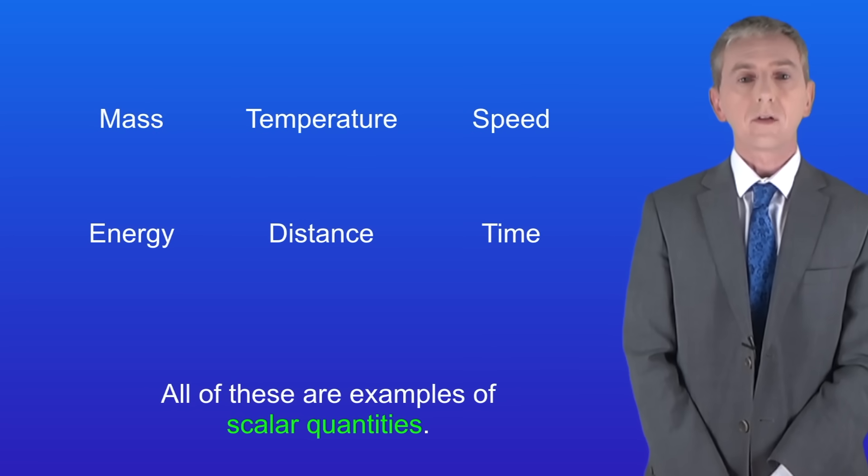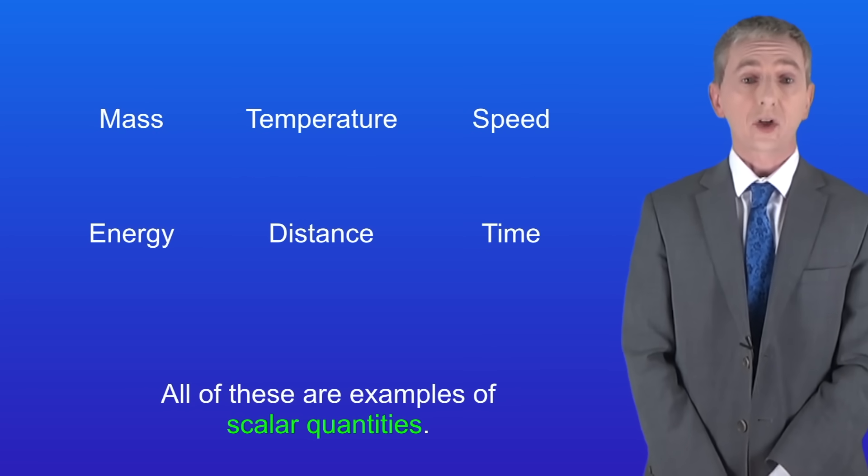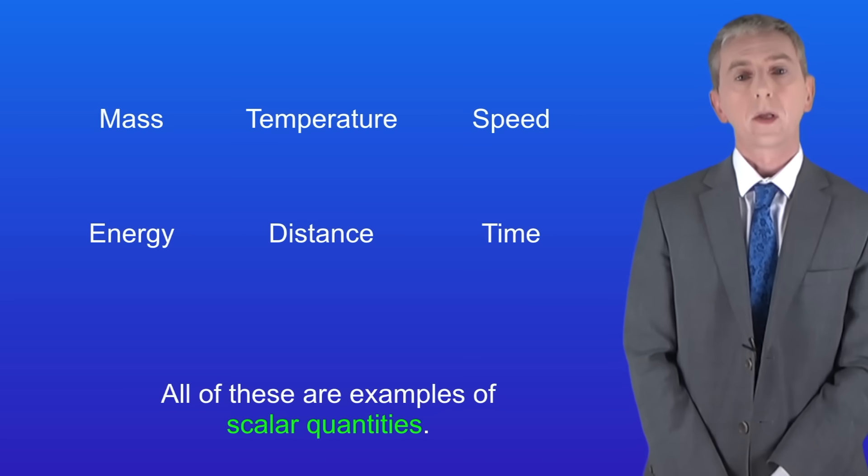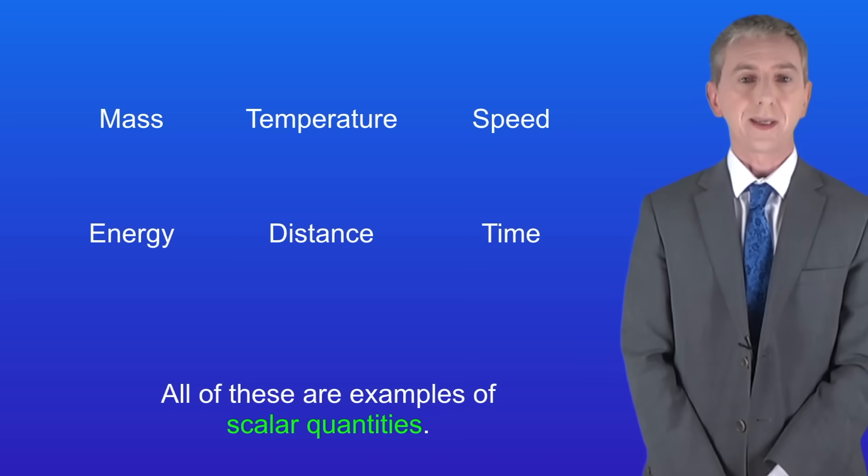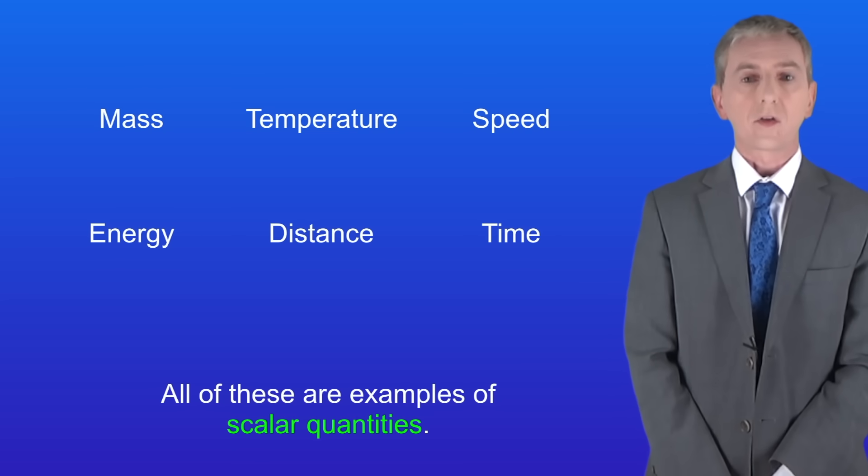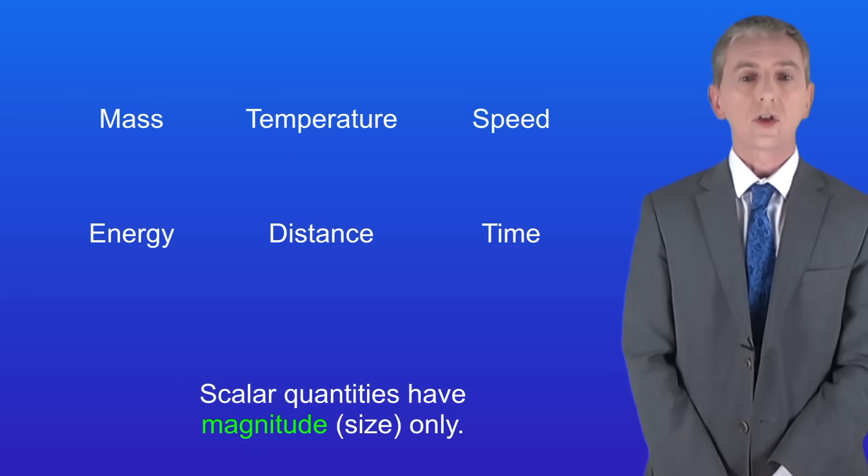I'm showing you here a list of different quantities that we often measure or calculate in physics. We've got mass, temperature, speed, energy, distance, and time. Now all of these are examples of scalar quantities. Scalar quantities have magnitude only, and the word magnitude means size.